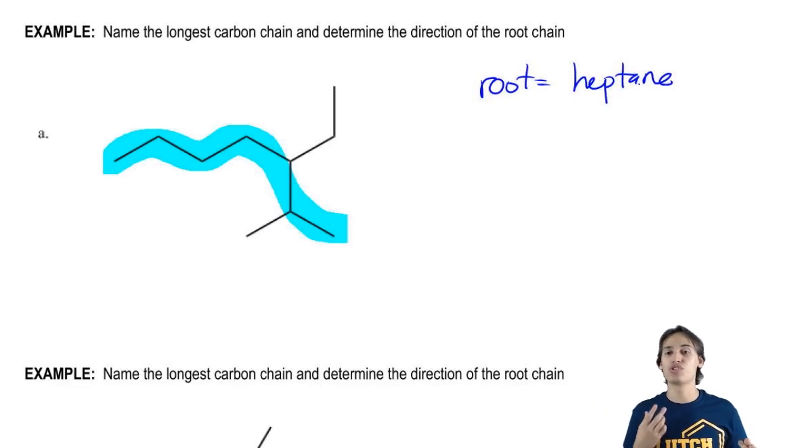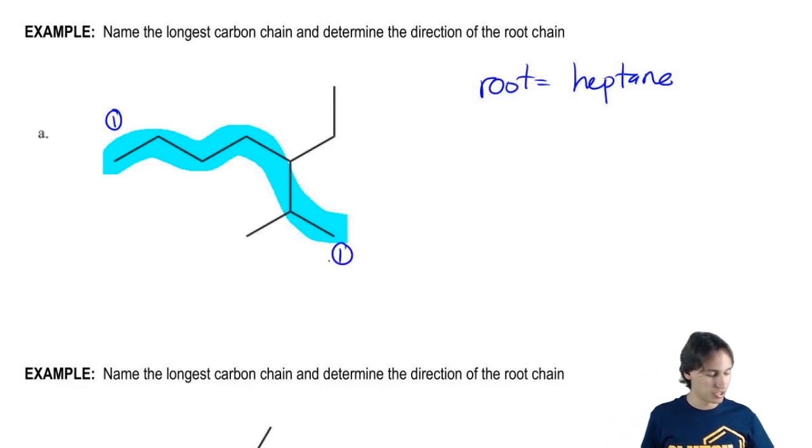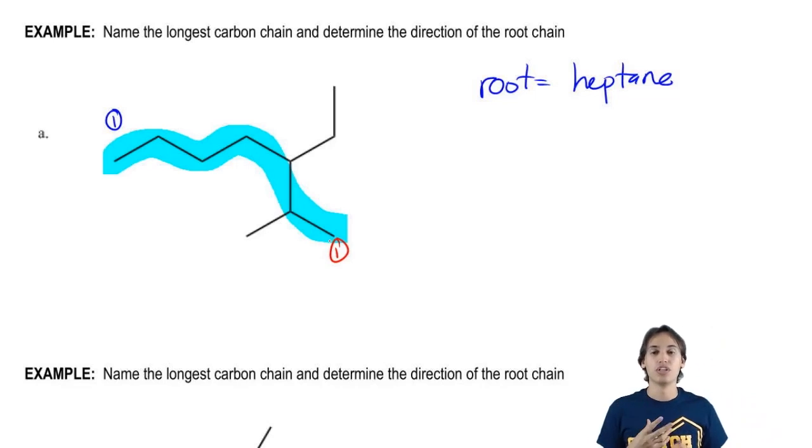So now all we have to do is determine the direction. Direction means simply is this going to be the first carbon or is this going to be the first carbon? Let me use different colors. So is the blue going to be my first carbon or is the red going to be my first carbon? So now we're on to rule number two. So do you guys remember how to decide that?